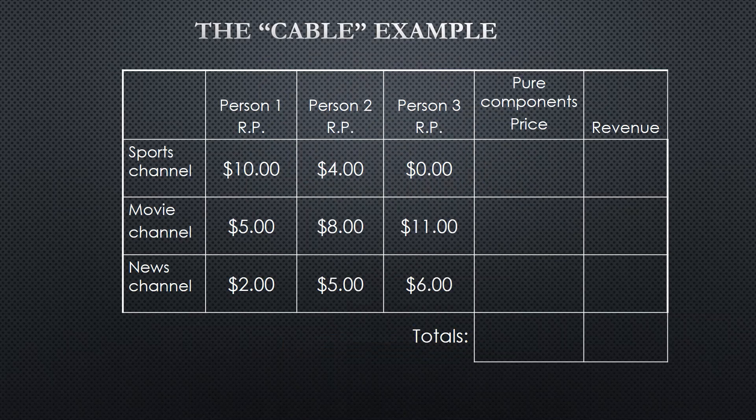To begin with, we're going to look at an example of a cable company that offers three different channels: a sports channel, a movie channel, and a news channel. We have three people with different reservation prices. A reservation price is the amount a customer is willing to pay — the value that they see in various offerings.